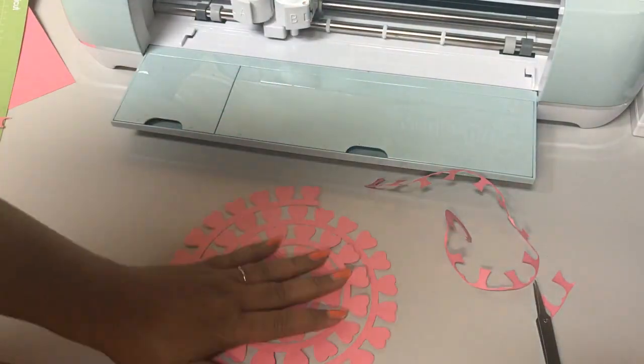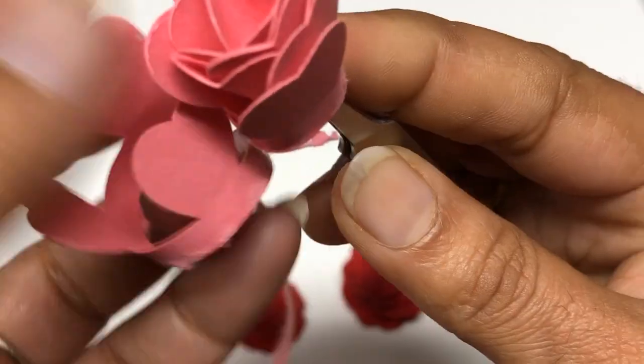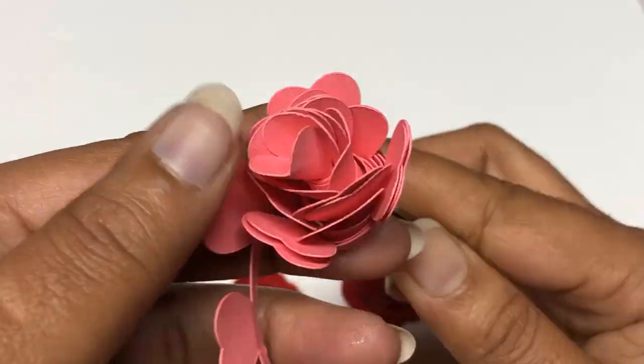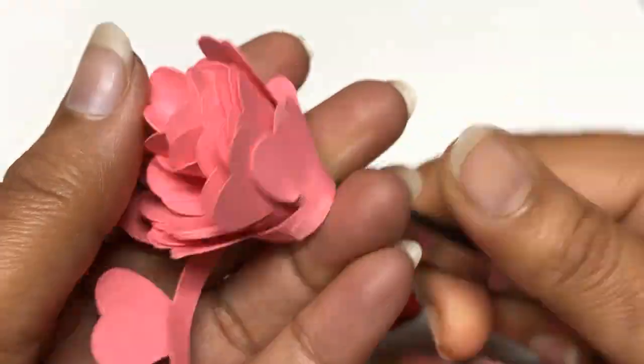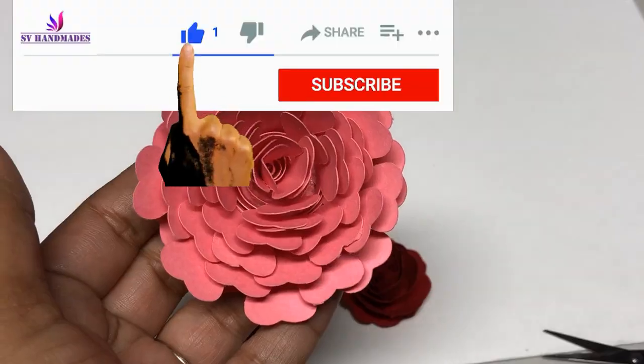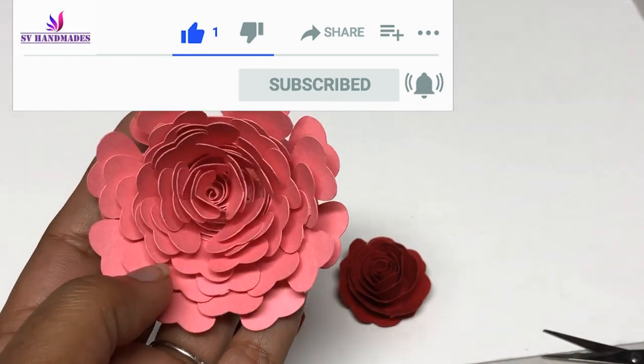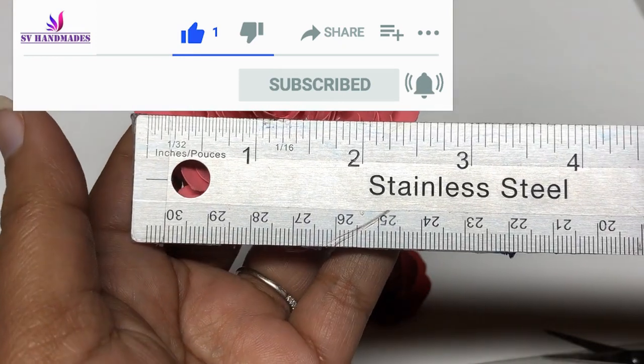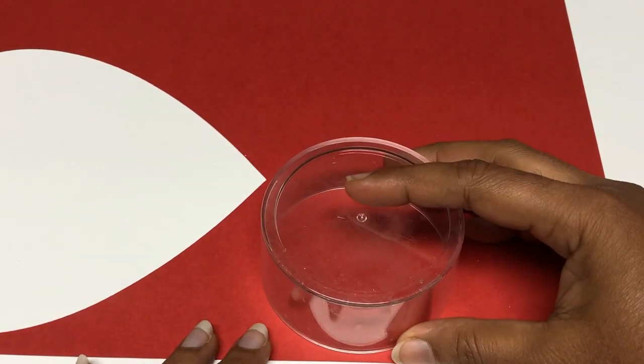Now your floral base is ready. Use a tweezer to roll up the flower that you just cut out. Don't they look pretty? So this will measure approximately about three inches.